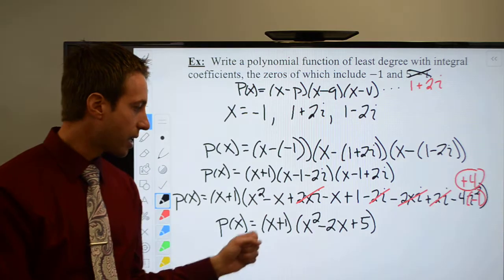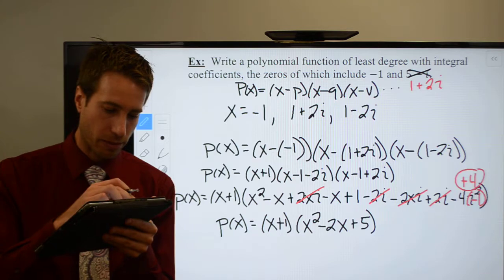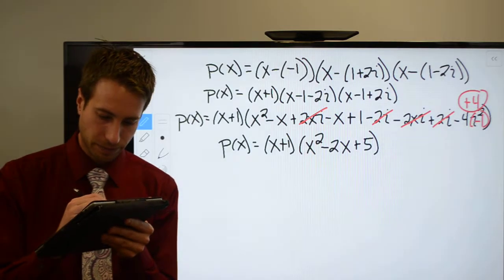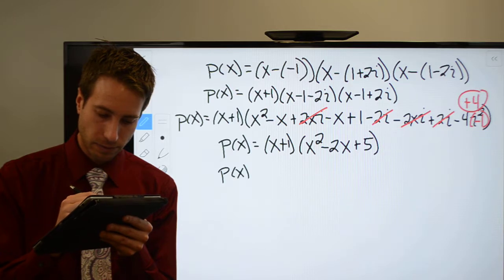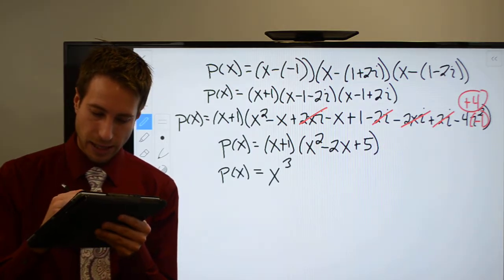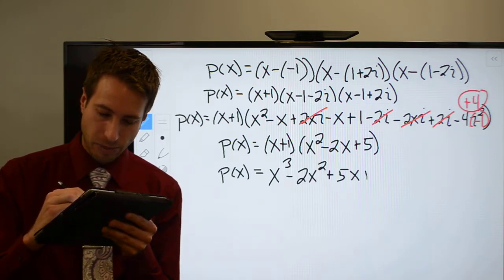All right guys, you're almost done. Here we go. We're going to distribute all of this together to get our final polynomial. Let me slide up just a little bit so you guys can see what we're doing. x times x squared: x cubed. x times negative 2x squared. That would be 5x plus.